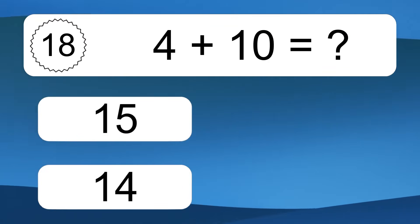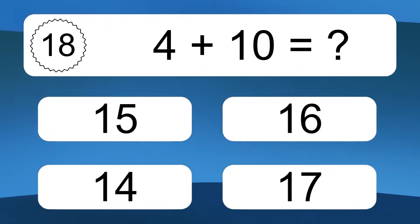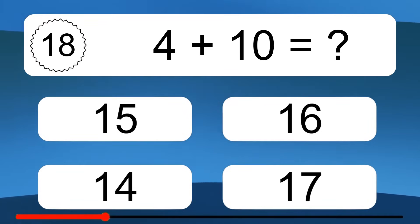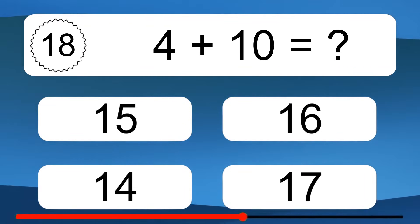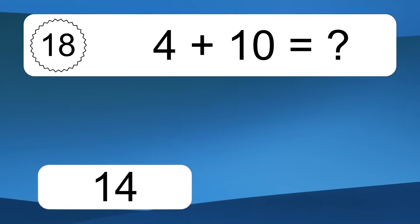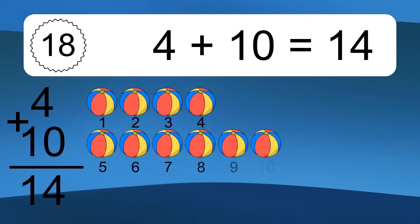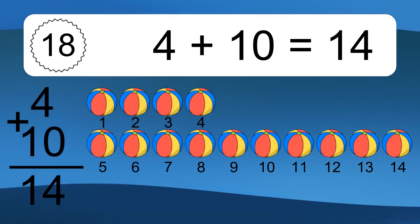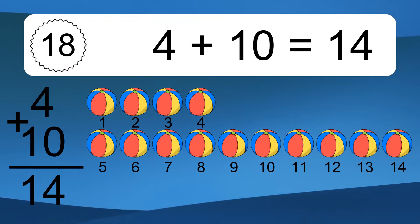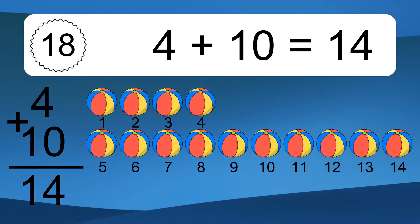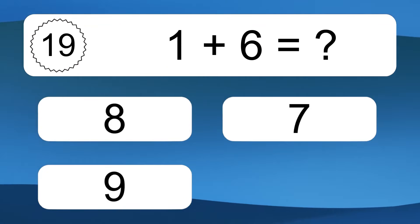4 plus 10 equals what? 4 plus 10 equals 14. Let's count it. 1, 2, 3, 4, 5, 6, 7, 8, 9, 10, 11, 12, 13, 14.